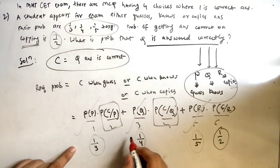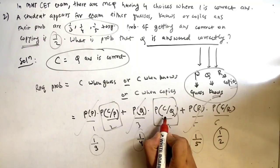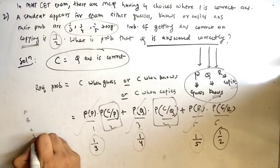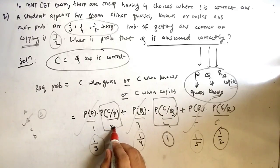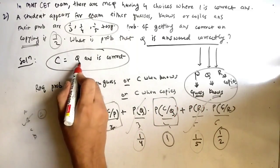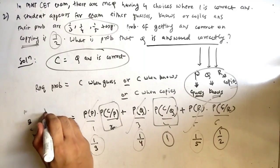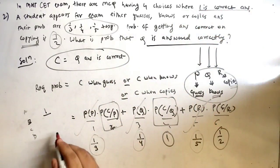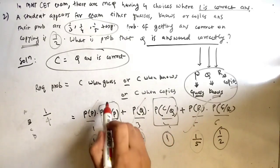For P(C|Q): Q means he knows the answer. If he knows the answer is B among options A, B, C, D, the probability he marks the correct answer is 1 — because he knows it. For P(C|P): P means he guesses. There are four options A, B, C, D, and he must guess one correct answer, so the probability is 1/4.